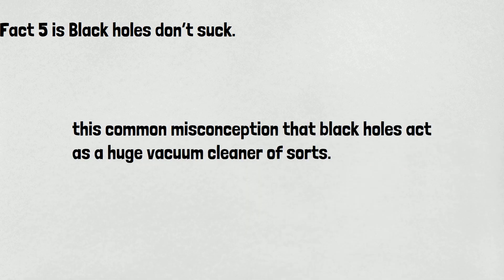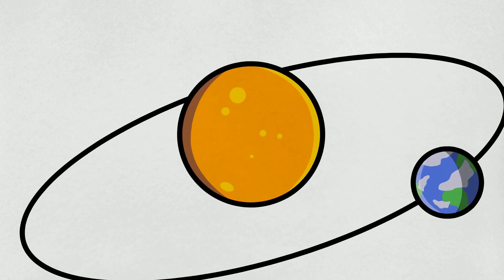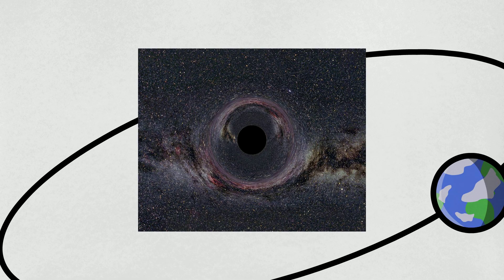While it's true black holes can pull matter in at incredible rates, it's all due to gravity, not some mysterious fan. If you were to replace the sun with a black hole of equal mass, then theoretically speaking, everything in the solar system should orbit as normal planets do.